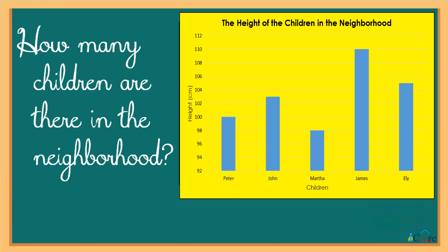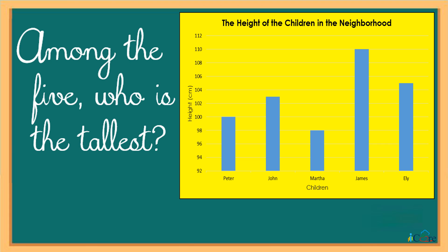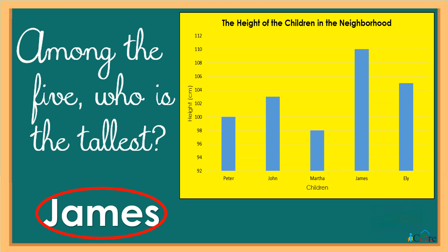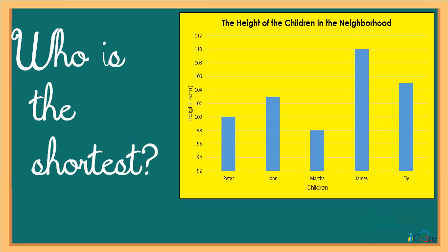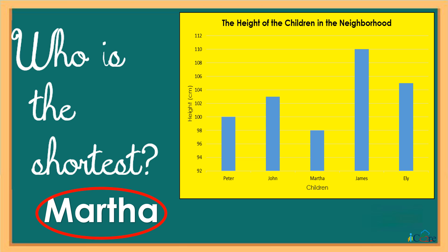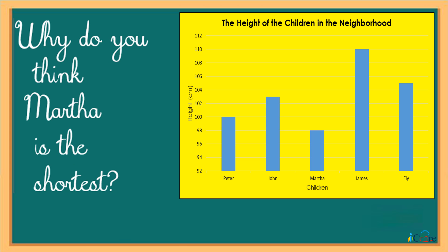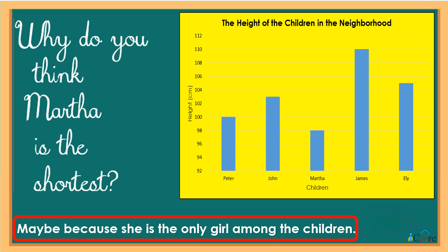How many children are there in the neighborhood? One, two, three, four, five. Five. Among the five, who is the tallest? Yes, it's James. Who is the shortest? Martha. Why do you think Martha is the shortest? Maybe because she is the only girl among the children.